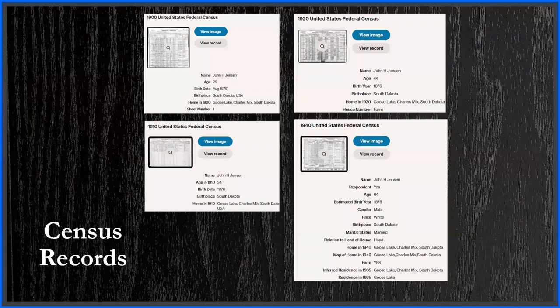The first step is to look at the census in that time period and see where he lives. Censuses are available for free on FamilySearch if you do not have a paid subscription to any of the major genealogy websites. The censuses for 1900 through 1940 all state he lives in Goose Lake Township, Charles Mix County, South Dakota, so I feel good about starting to look for his land records in that township location.